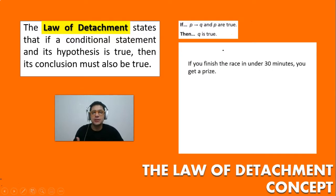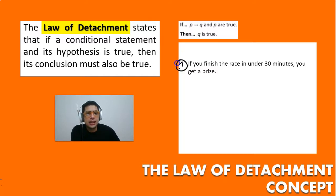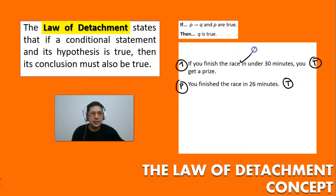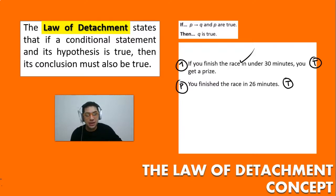Let's take a look at some examples. The first conditional says: if you finish the race under 30 minutes, you get a prize — we assume that to be true. And then we assume that p, which is that you finish the race in 26 minutes, is true. So the hypothesis is confirmed: you finished the race in under 30 minutes.